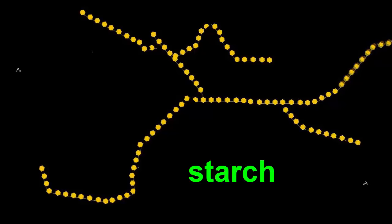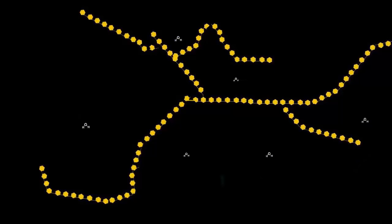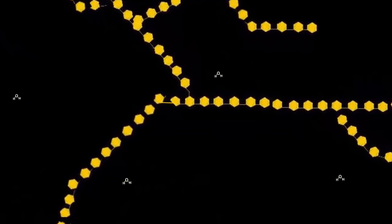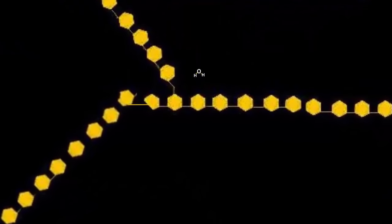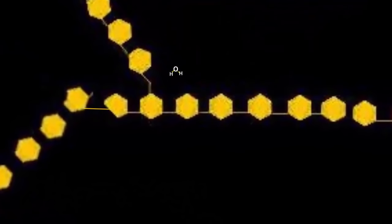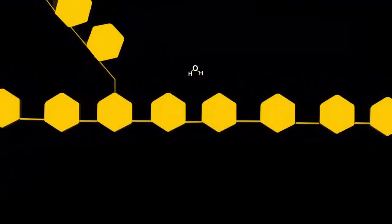If starch is soaked or boiled in water, the water molecules can get in between the flexible starch molecules as well as between the molecules' branches and separate them from each other. This makes the starch swell and go mushy.